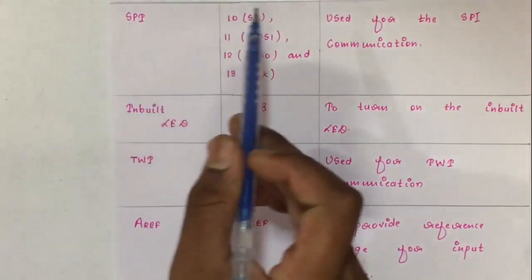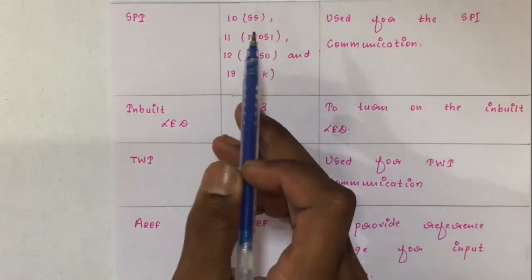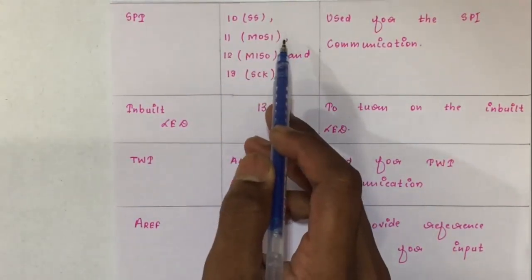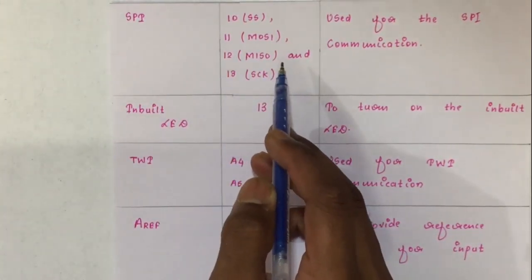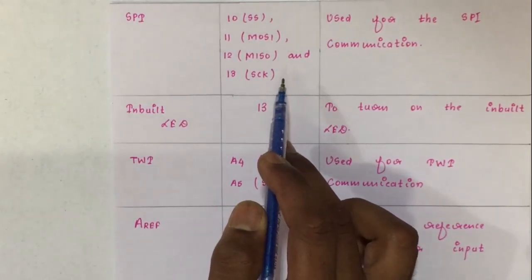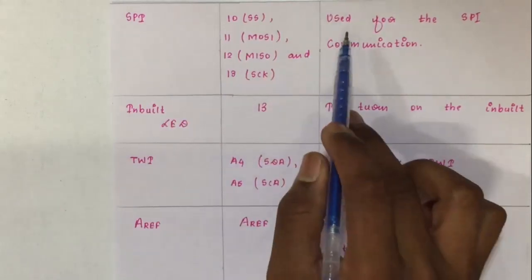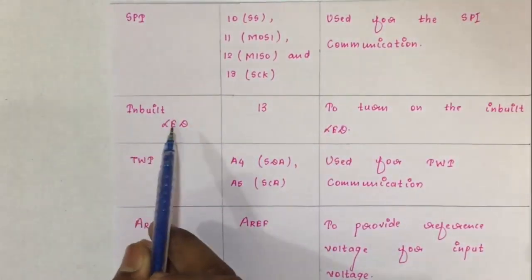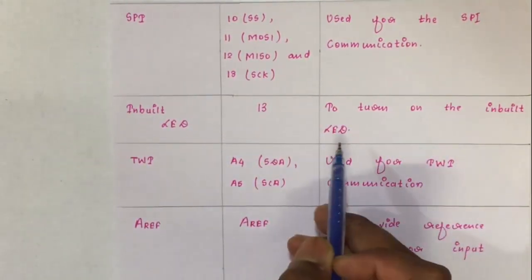Let's talk about SPI pins. There are total 4 SPI pins. Pin 10 is SS — slave select. Pin 11 is MOSI — master out slave in. Pin 12 is MISO — master in slave out. Pin 13 is SCK — serial clock. SPI, also called serial peripheral interface, is used for SPI communication. Another pin is the inbuilt LED pin: pin 13 is the inbuilt LED pin which is used to turn on the inbuilt LED.